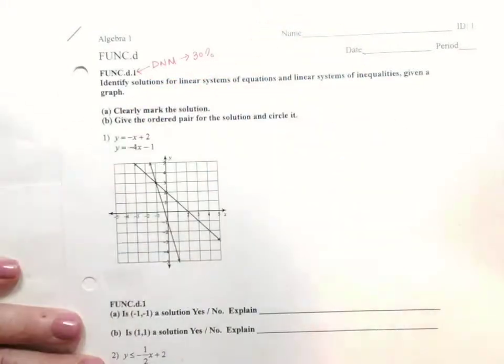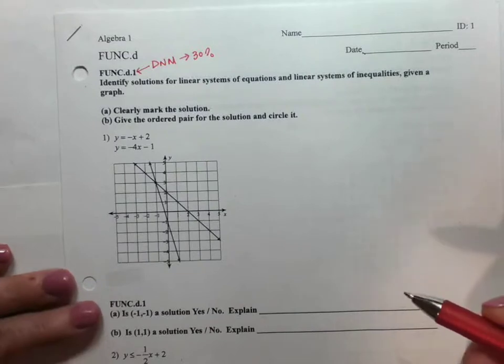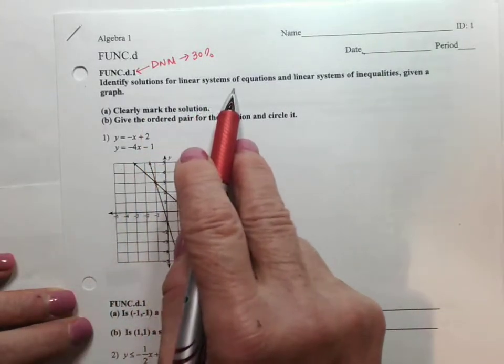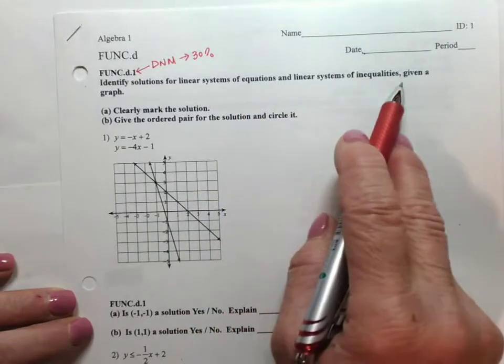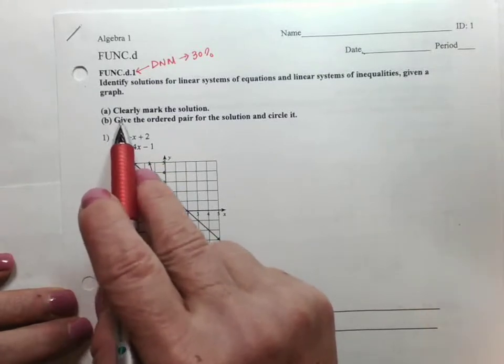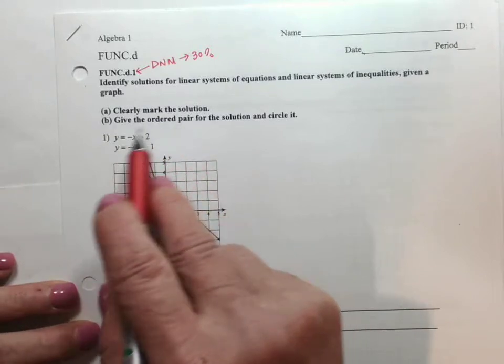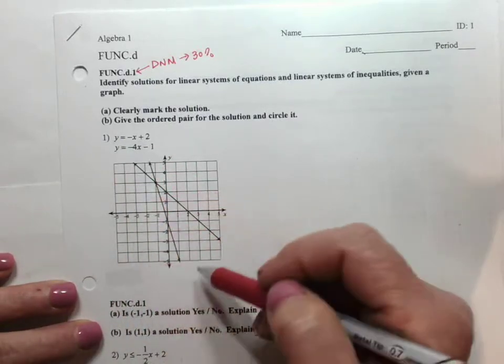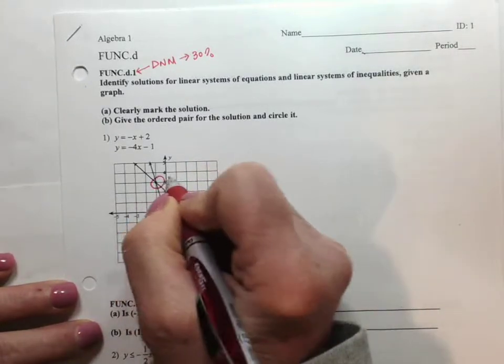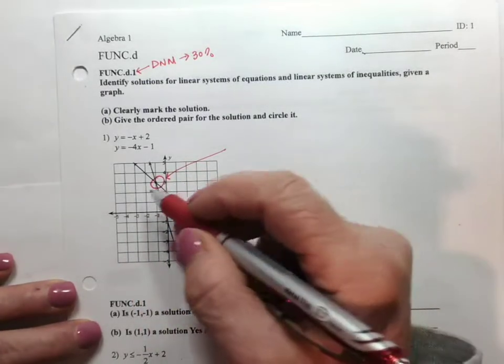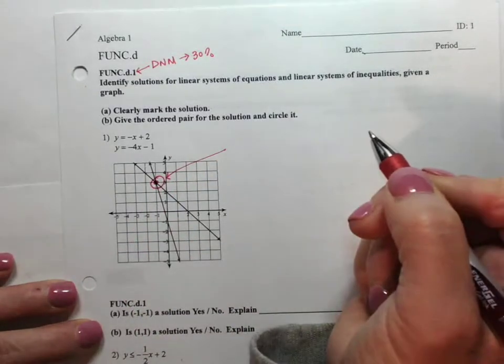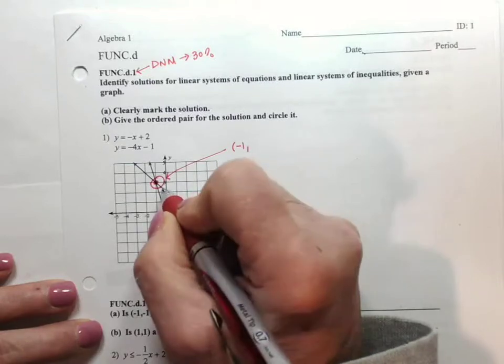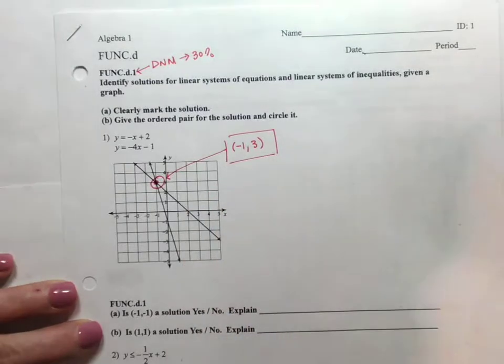And if you take the assessment and you get does not meet, that's equivalent to a traditional grade of 30%. So here are basically three examples for the level one. Identify solutions for linear systems of equations and linear systems of inequalities given a graph. So make sure you always read the directions carefully. It says clearly mark the solution, give the ordered pair for the solution and circle it. So all you need to do here is you have two lines, you have the graph and you look for the point of intersection. And what it asks you is to clearly mark that point and give the ordered pair. So the ordered pair is negative one, three. And that's your answer. Circle it.